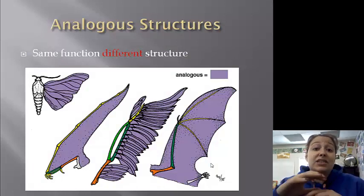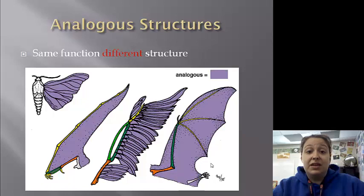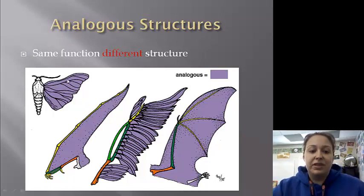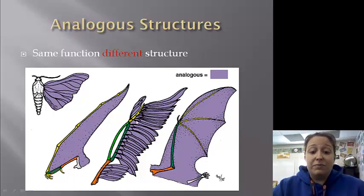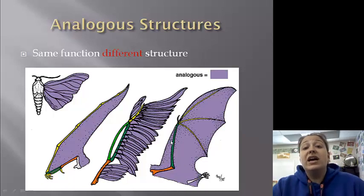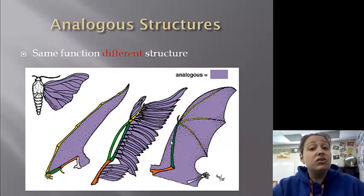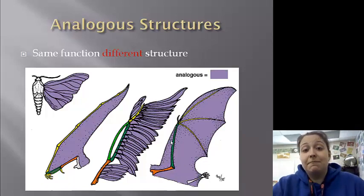Analogous structures are the exact opposite — they have the exact same function but may be completely different structures. The wing of a moth, the wing of a bat, the wing of a bird are all analogous — created from completely different structures, but they all do the same thing: they help them fly.